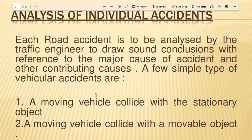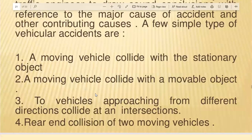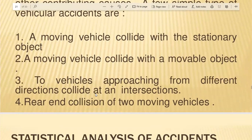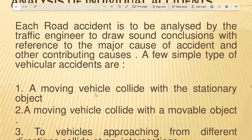There is a simple type of vehicular accident, such as a moving vehicle colliding with a stationary object, or a moving vehicle colliding with a movable object. Two vehicles in different directions may collide at an intersection, or there may be a rear-end collision of two moving vehicles. The traffic engineer analyzes road accidents and their major causes and contributing factors.